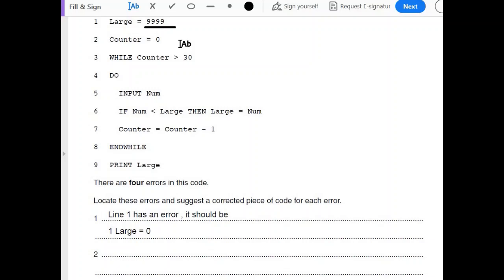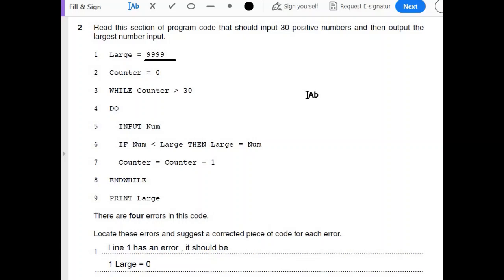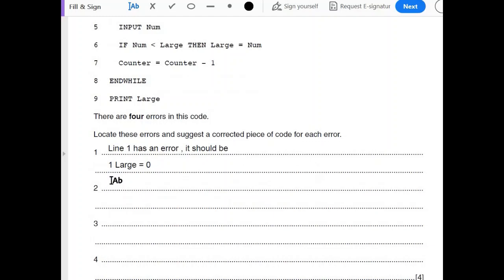Counter equals 0, that is fine. While counter is greater than 30? No, that is wrong. If this condition, it would never be met. Counter is 0 so the loop would not run, so this is wrong. Wrong logic, comparative operators or comparison operators are one of the most common types of errors found in the question.